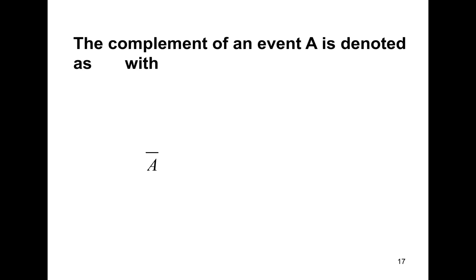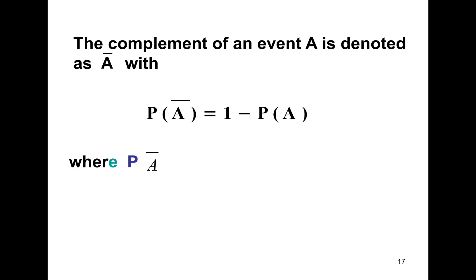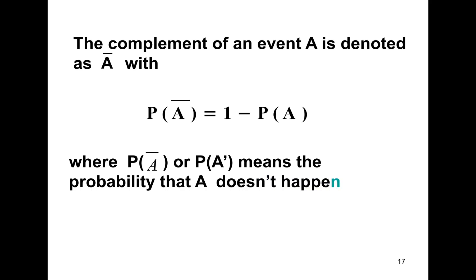The complement of an event A is denoted as A bar or A prime. The probability of A bar or A prime is equal to 1 minus the probability of A, where P(A bar) or P(A prime) means the probability that A does not happen.